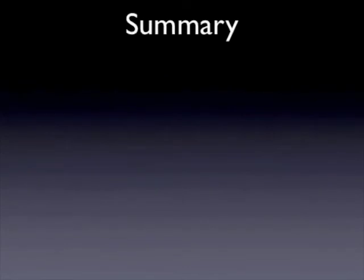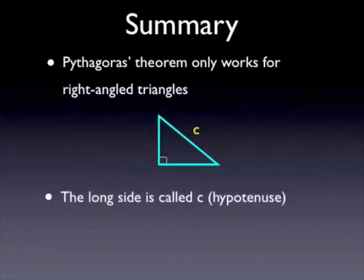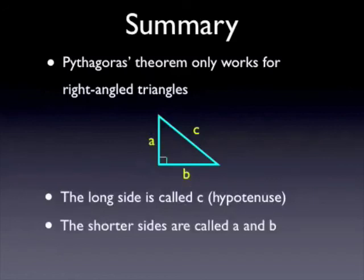So in summary, some main points. Pythagoras' theorem only works for right-angled triangles. The long side is called C, or the hypotenuse. The shorter sides are called A and B. And the rule, which you need to remember, is A squared plus B squared equals C squared. So that's a bit of an introduction to Pythagoras' theorem. Bye.